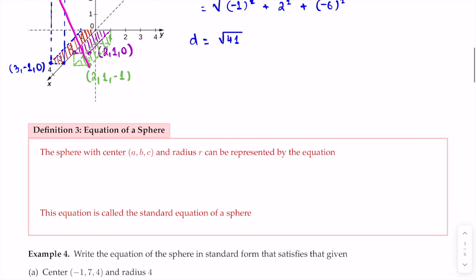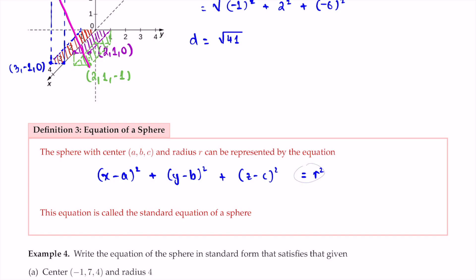In the next topic, we write the equation of a sphere. A sphere with center (a, b, c) and radius r is represented by the standard equation: (x - a)² + (y - b)² + (z - c)² = r². This is the standard equation of a sphere.